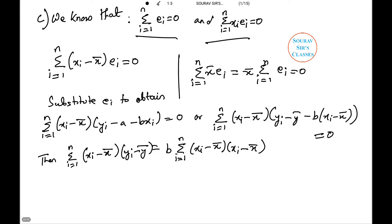Then summation i from 1 to n (x_i minus x bar)(y_i minus y bar) equals b summation 1 to n (x_i minus x bar)^2.